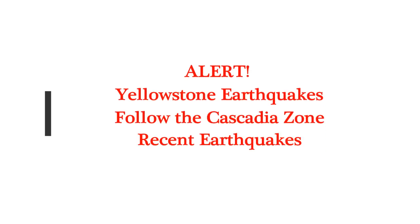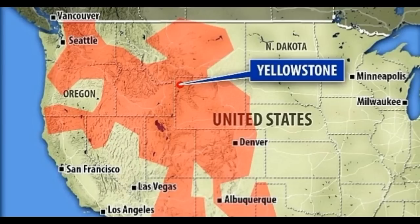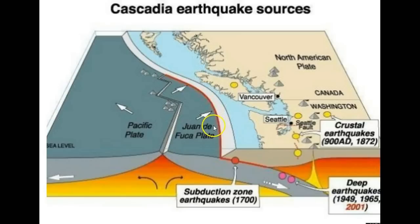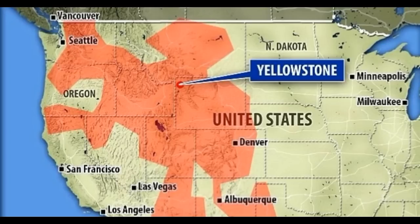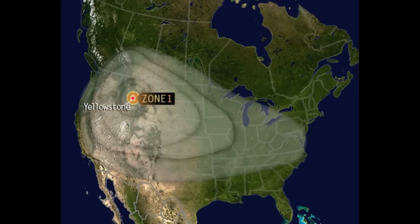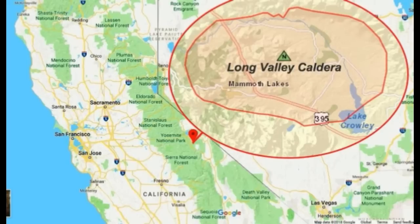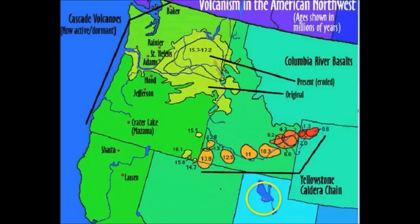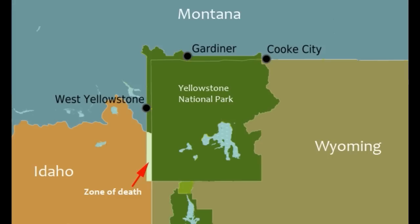Yellowstone earthquakes are linked to the Cascadia subduction zone earthquakes we've had recently. It's logical because of the huge massive carbon lake recently found stretching all the way from the west coast of the Pacific Ocean across — here is Yellowstone — covering basically half of the United States. A massive lake of molten carbon the size of Mexico has been discovered under the United States, as Yellowstone is one of the few super volcanoes of the world.